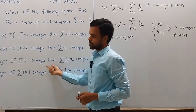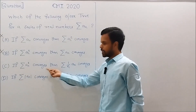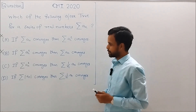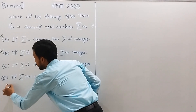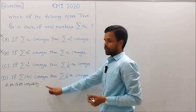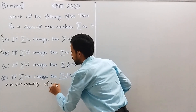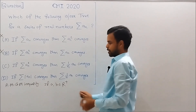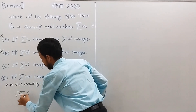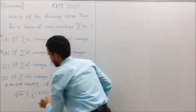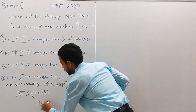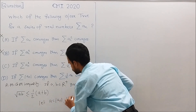Now let us move to Statement C: if series An squared converges, then series An over n converges. This is a true statement. We will use the AM-GM inequality, which states that if a and b are positive real numbers, then their geometric mean is less than or equal to their arithmetic mean. Let a equal mod An and b equal 1 over n. Since we have a series of real numbers, An may be negative, so we use the absolute value.